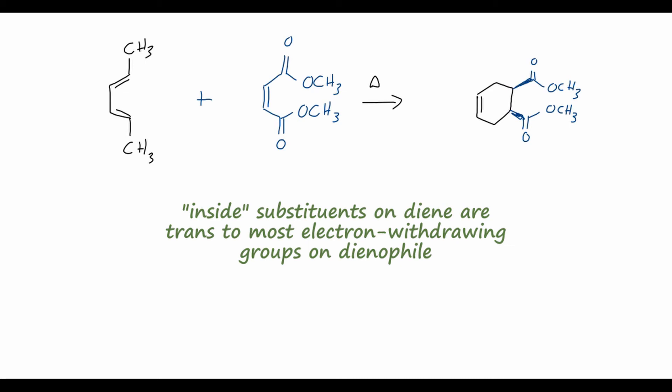Breaking that rule down: the inside substituents on the diene are the hydrogens pointing in towards the ring. The most electron-withdrawing groups on the dienophile are the ester groups. Those hydrogens are trans to the ester groups, meaning on the final product the hydrogens point into the page away from us, which means both methyl groups come out of the page towards us — on the same side as the ester groups. That is how we determine the stereochemistry of a more complex Diels-Alder product.